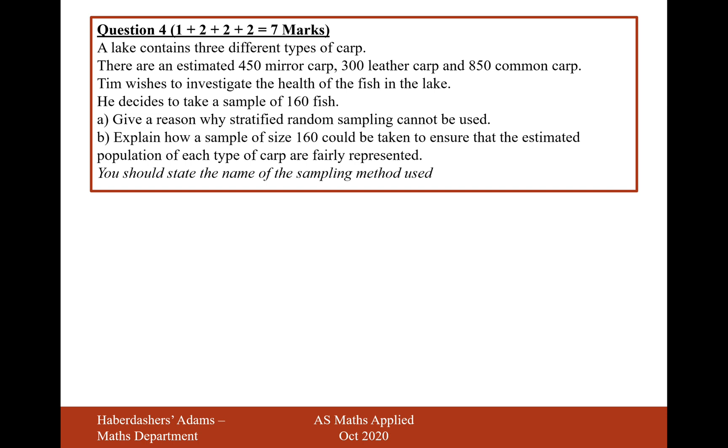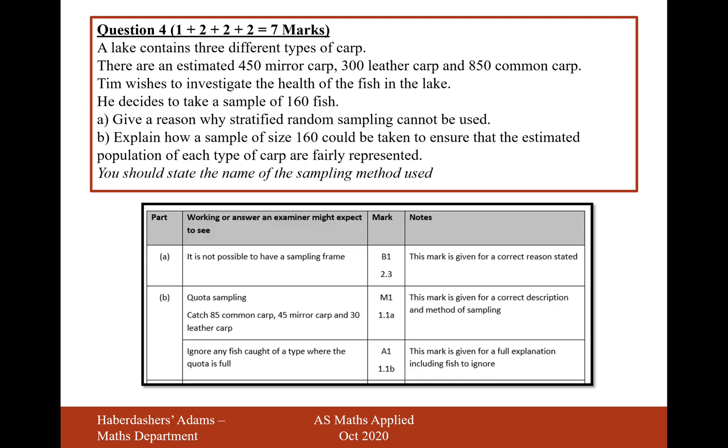Give a reason why a stratified random sample can't be used. Well, if we have a look at what it says in the mark scheme, it says it's not possible to have a sampling frame. And a sampling frame is a list of all the fish that is in the lake, and then you can pick out from that sample your random stratified sampling, your proportions of the groups that you would like to select your 160 fish from. So it should be in proportion to the size of the groups. We don't have a sampling frame. We don't have a list of all the fish, the names of all the fish, et cetera.